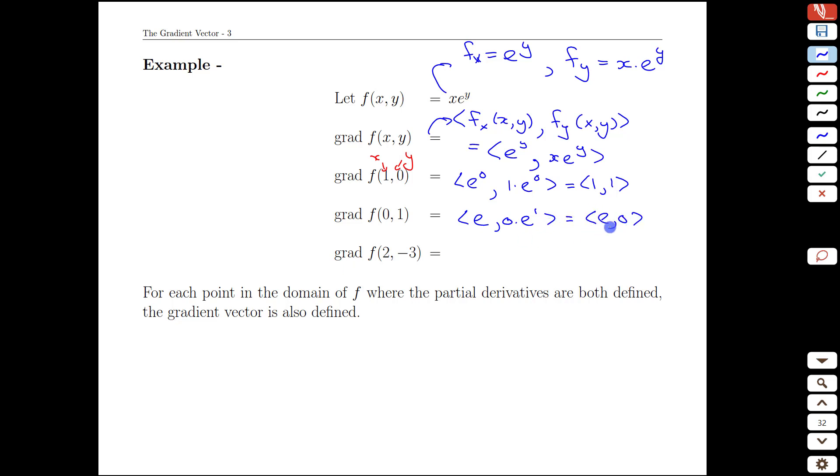So these are just vectors, we are not quite sure what they mean yet, but we can calculate them as needed. Plug in x equals 2, again going back to this formula, the y shows up first though, so it would be e to the negative 3 and then x times e to the y, so 2 times e to the negative 3. And we can do this at any point we like. Anywhere in the domain where the partial derivatives are both defined, we can build this gradient vector.